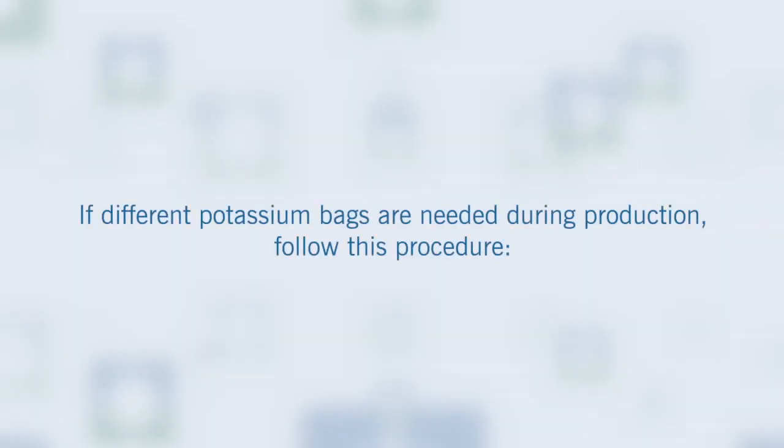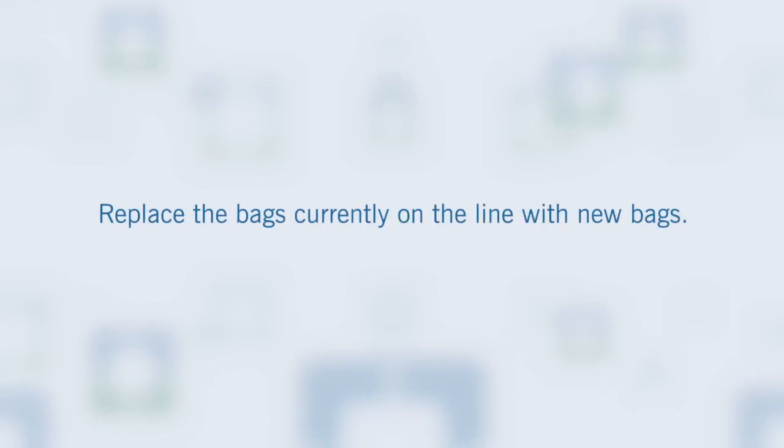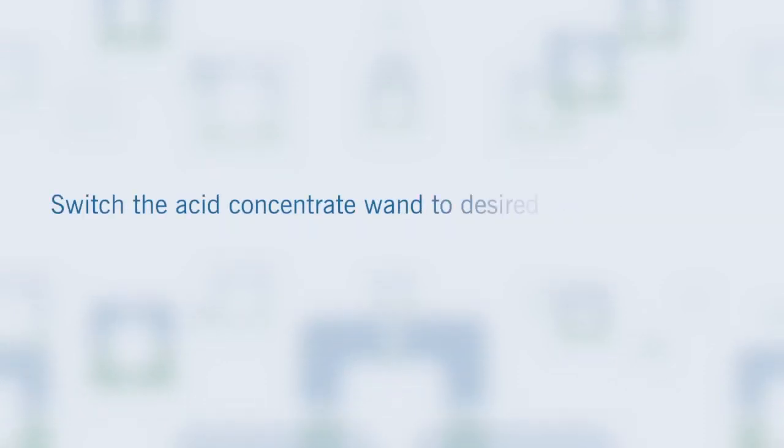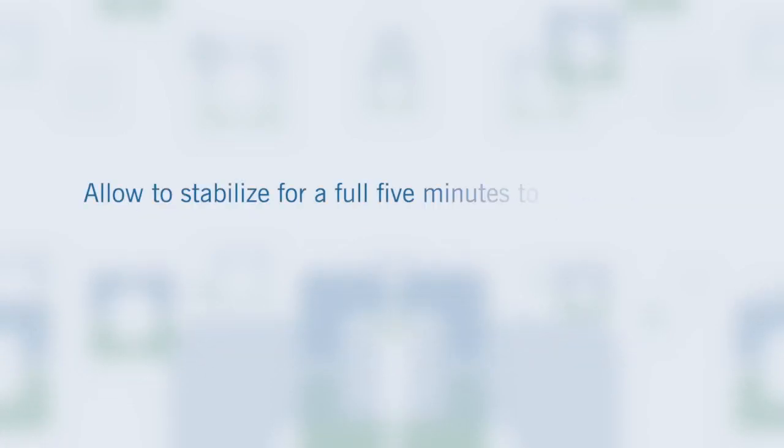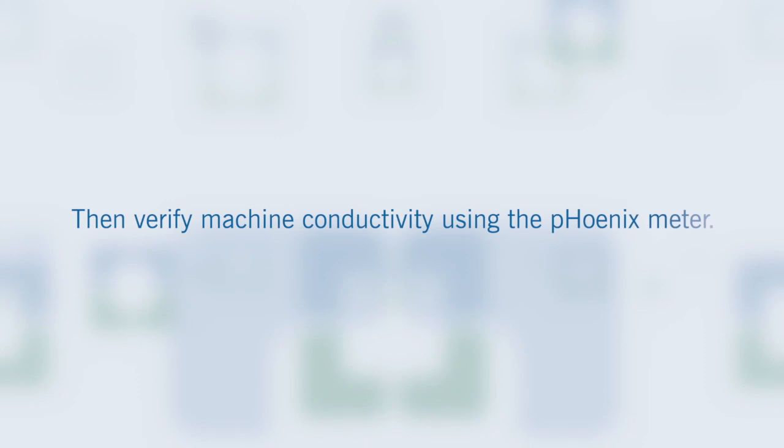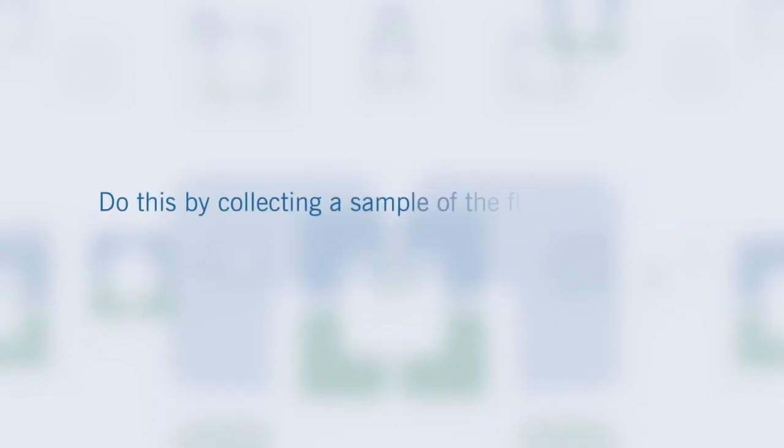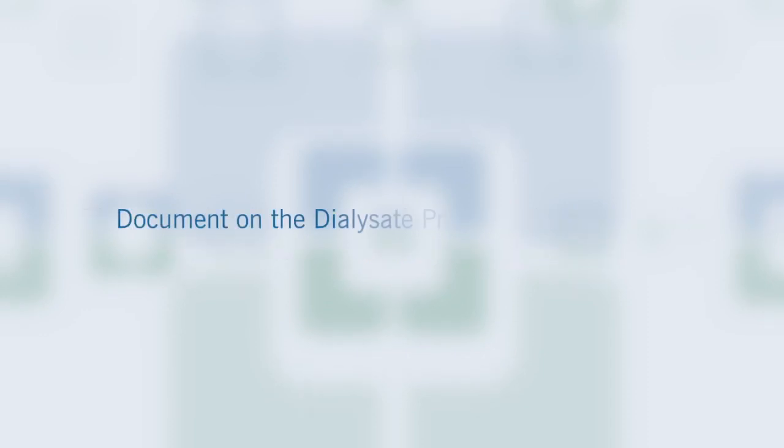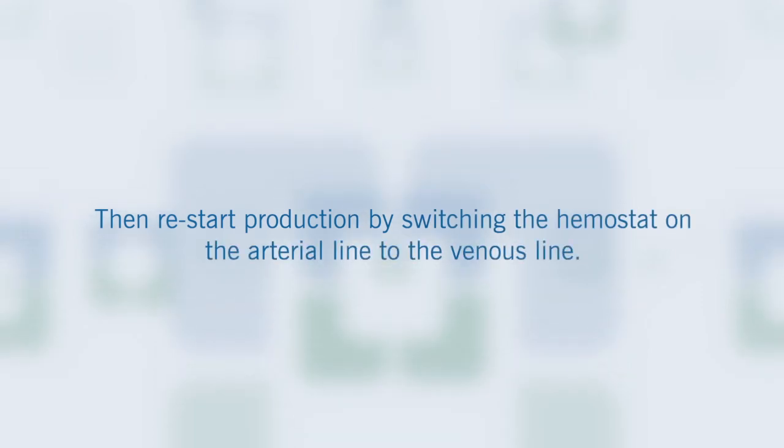Step 23: If different potassium bags are needed during production, follow this procedure. Place the hemostat on the arterial line. Replace the bags currently on the line with new bags. Put the machine into bypass mode. Switch the acid concentrate wand to desired acid concentrate. Place the machine back into normal operation. Allow to stabilize for a full 5 minutes to allow the new dialysate to flow through the system. Then verify machine conductivity using the Phoenix meter. Do this by collecting a sample of the fluid coming out of the venous line, then sample with the Phoenix meter and ensure the pH and conductivity are in the proper ranges. Document on the dialysate preparation log sheet. Then restart production by switching the hemostat on the arterial line to the venous line.